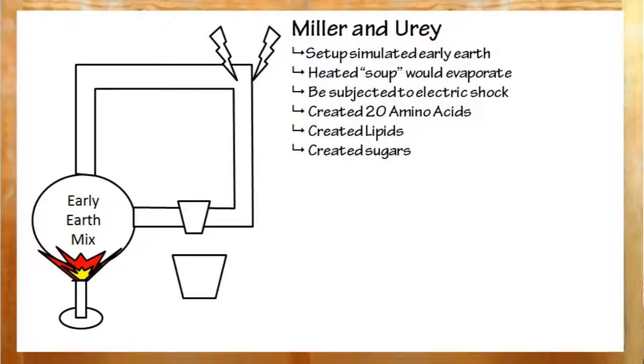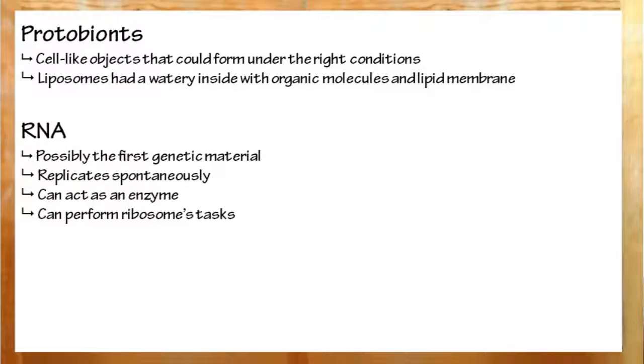Scientists also discovered that protobionts, cell-like things, could arise given the right conditions. We also theorized that RNA was the first genetic material because it is easy to create. It spontaneously self-replicates. It can even act as enzymes in certain cases. Endosymbiotic theory states that mitochondria and chloroplasts, two organelles, were actually absorbed by larger cells and eventually became organelles even though they were originally prokaryotic.